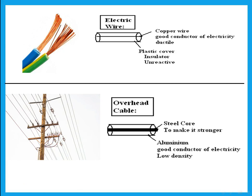Comparing electric wire and overhead cables: electric wire has copper inside — a good conductor of electricity that is ductile — and a plastic or polymer cover outside, because plastic is an insulator and is unreactive, so it will not corrode. Overhead cables are aluminium on the outside — a good conductor of electricity with low density — with steel inside to make the cable strong enough to support its own weight.